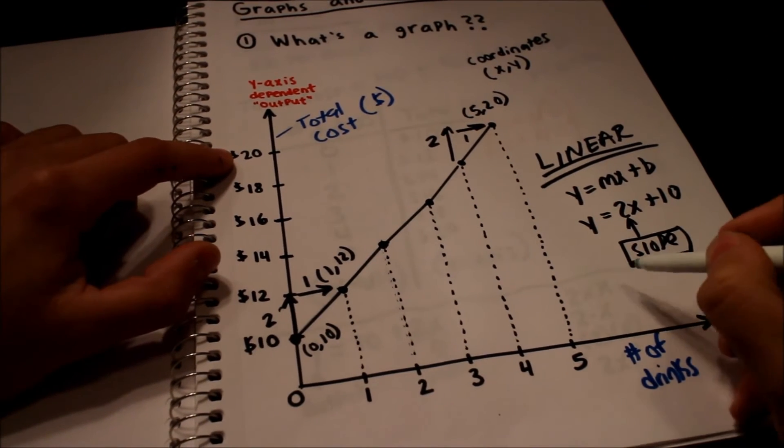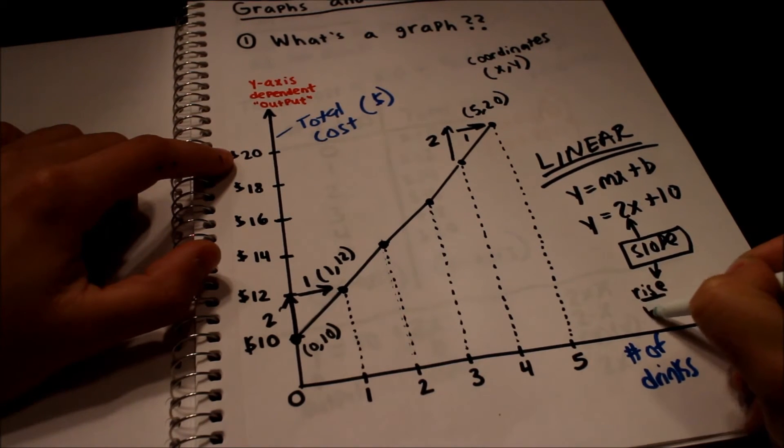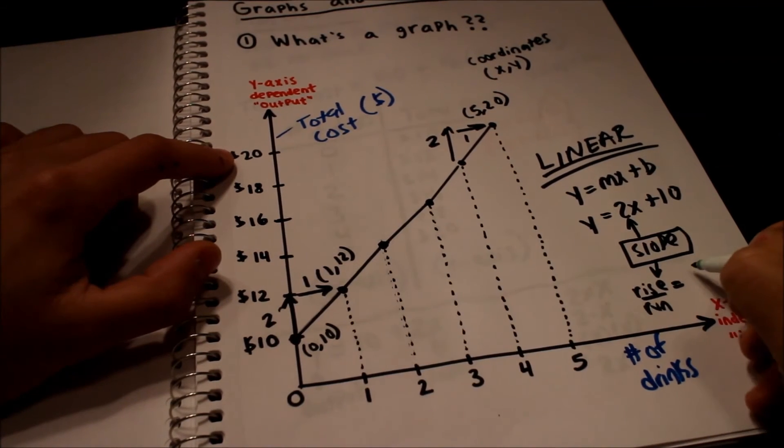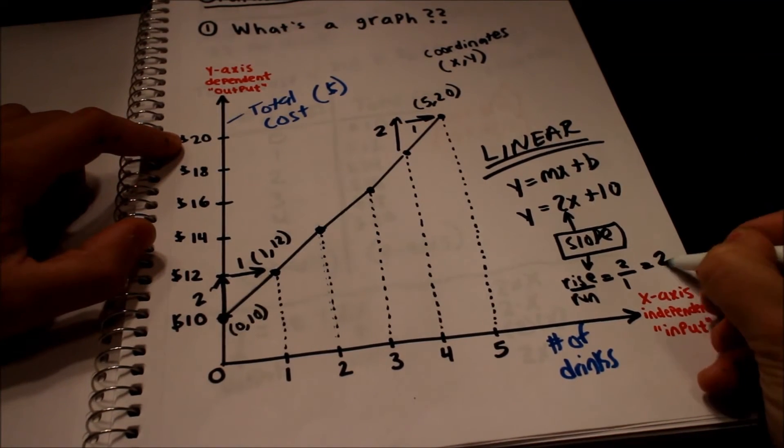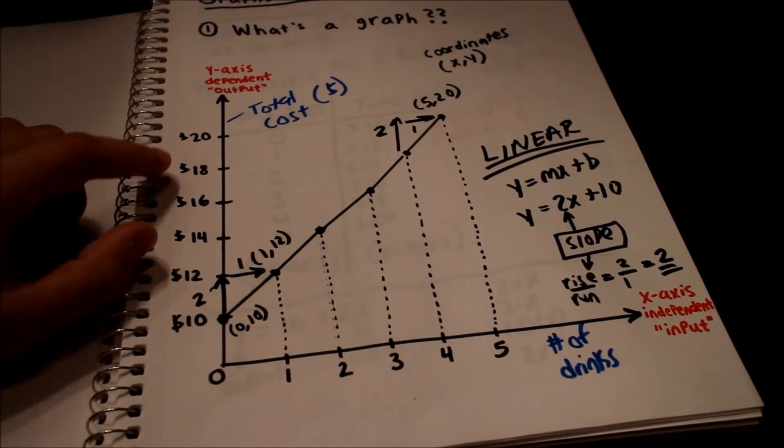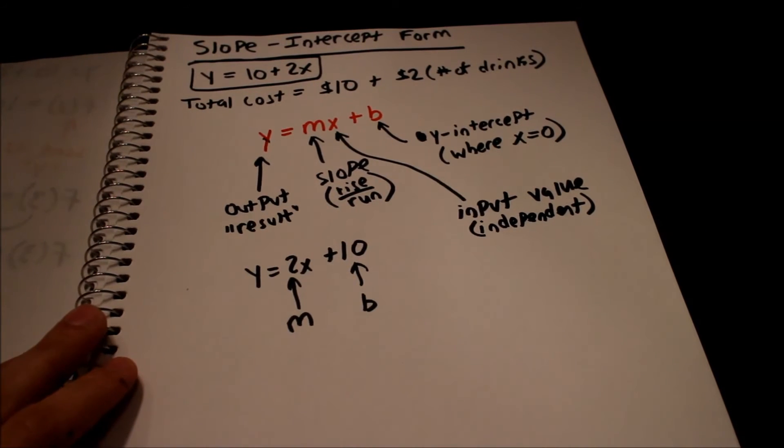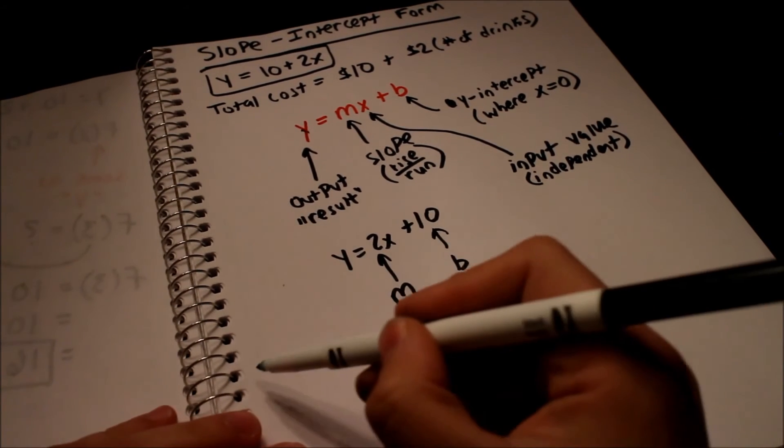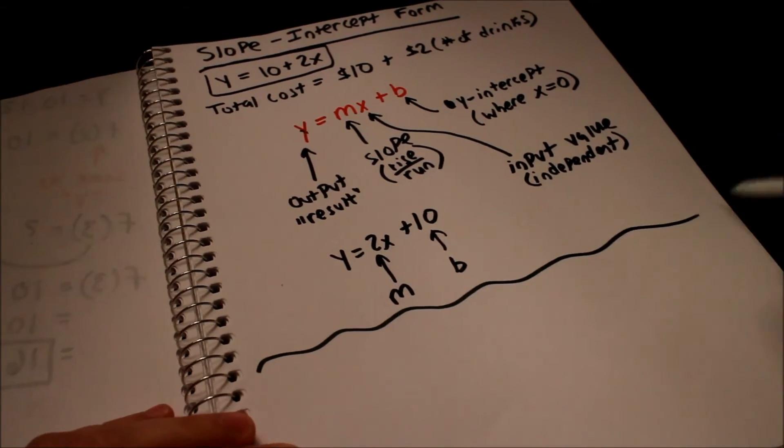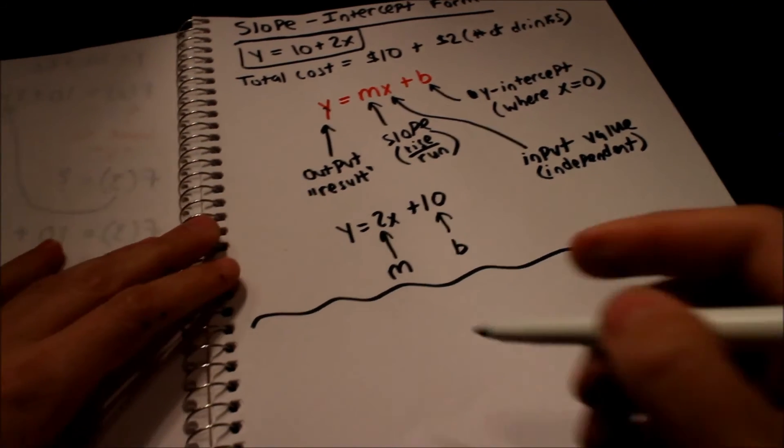So the slope, remember we said slope, this is always rise over run. We rose 2 and we ran 1. So 2 divided by 1, that just equals 2. And that's why it's our slope. Makes sense? See, it's not that bad. So that's pretty cool. So let me look at one more quick example, this y equals mx plus b stuff. Let's see, let's look at an example.